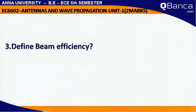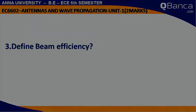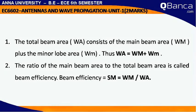Define Beam Efficiency: The total beam area W_A consists of the main beam area W_M plus the minor lobe area W_m. Thus, W_A is equal to W_M plus W_m. The ratio of the main beam area to the total beam area is called Beam Efficiency.